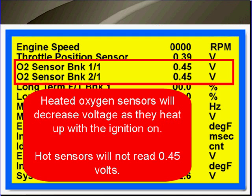As soon as you turn the ignition switch on, the oxygen sensor heater starts heating the oxygen sensor and voltage will decrease. Hot oxygen sensors will not read the reference voltage of 0.4 volts. In fact, it's a good test for heated oxygen sensors — turn the ignition on and watch the voltage change.